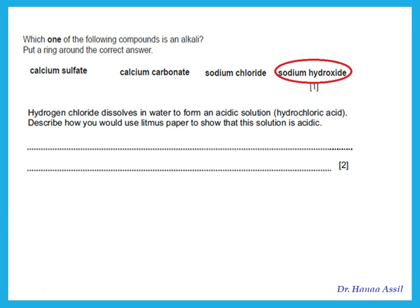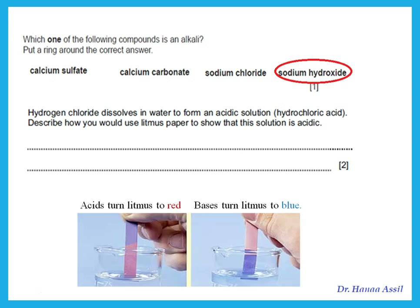Hydrogen chloride dissolves in water to form an acidic solution, which we call hydrochloric acid. Describe how you would use litmus paper to show that this solution is acidic. Litmus paper is either blue or red. If you put blue litmus paper in acid, it turns red. If you put red litmus paper in a base, it turns blue. So to show something is acidic, insert blue litmus paper — it should turn red.